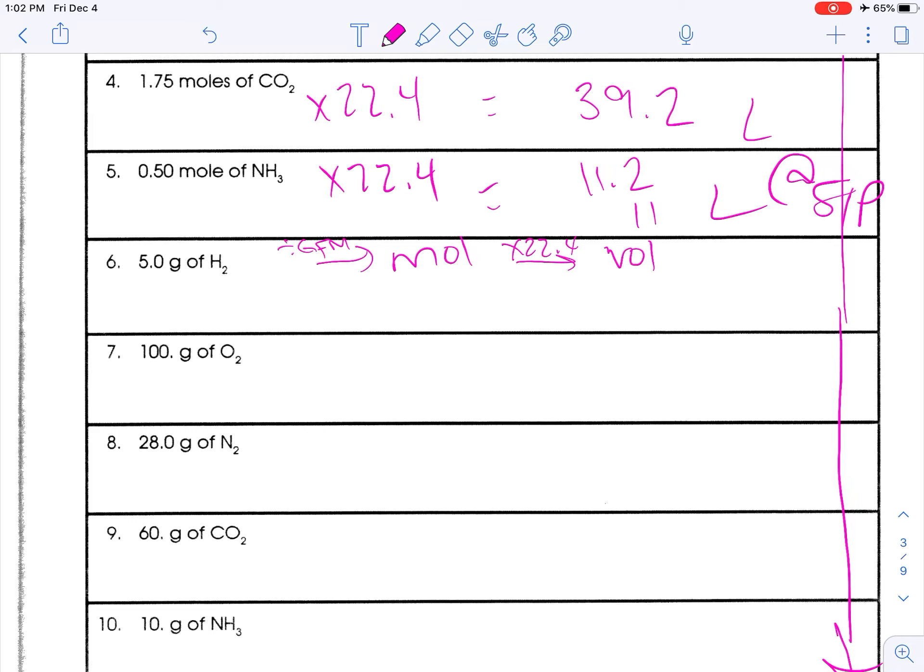Okay. H2. H has a mass of one, but there are two of them. So, it's two for GFM. So, five divided by two is 2.5 moles times 22.4. 2.5 times 22.4 equals 56 liters. And, my sig figs are good.